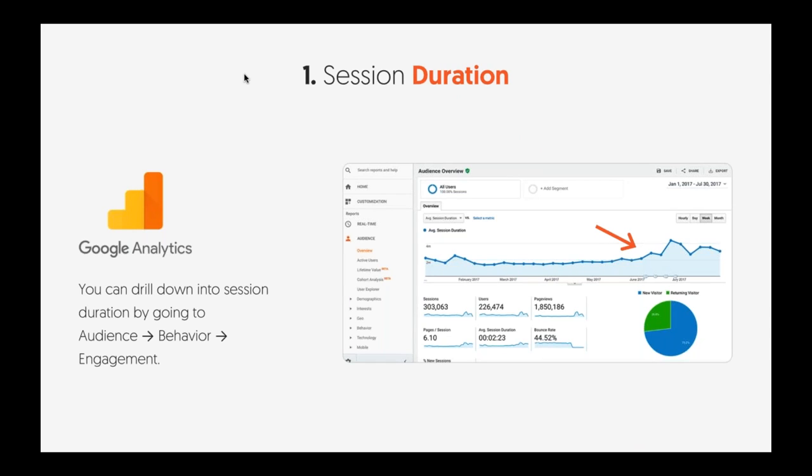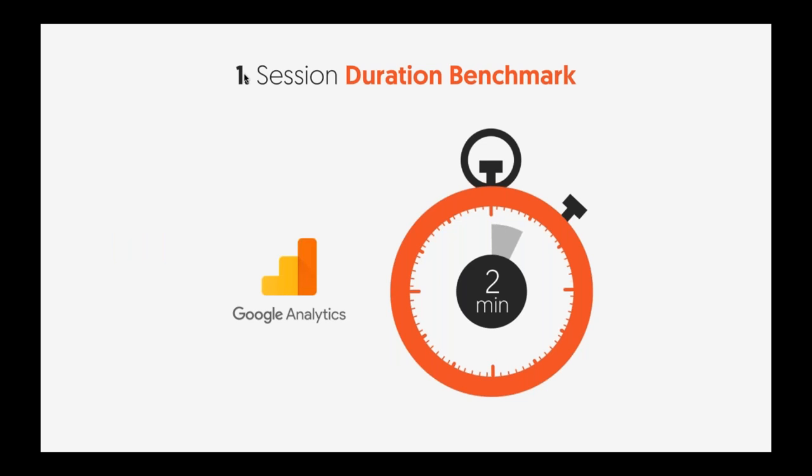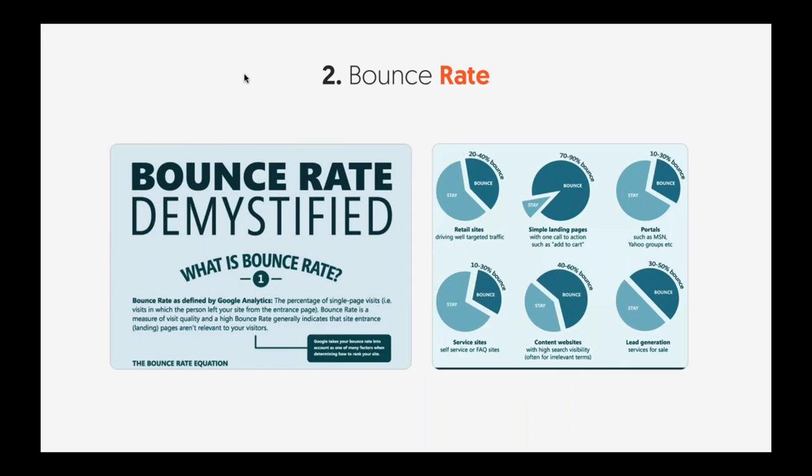Go into Google Analytics. Click on Audience in the left side, then click on Behavior, and then click on Engagement. That will give you session duration information. If your session duration per page is over two minutes, you're doing really well. If it's under that, you may want to consider improving it. Not all pages should have two minutes — checkout pages and conversion-related pages should have lesser duration than informational pages. But if your average site is over two minutes, you're doing quite well.